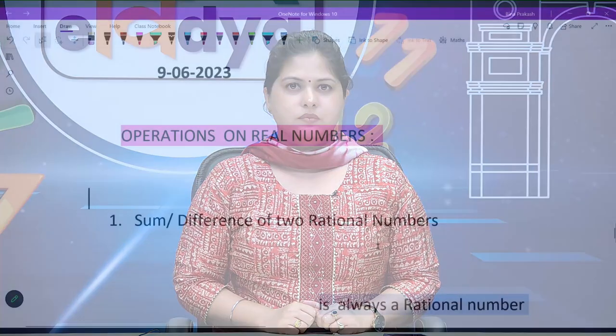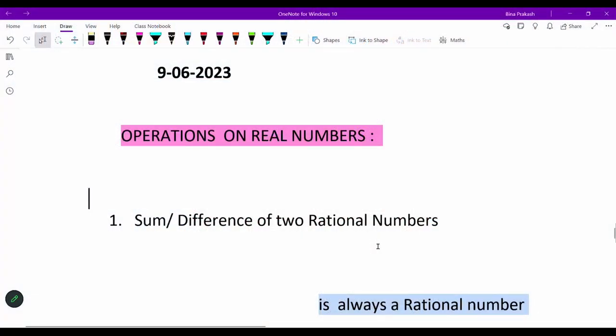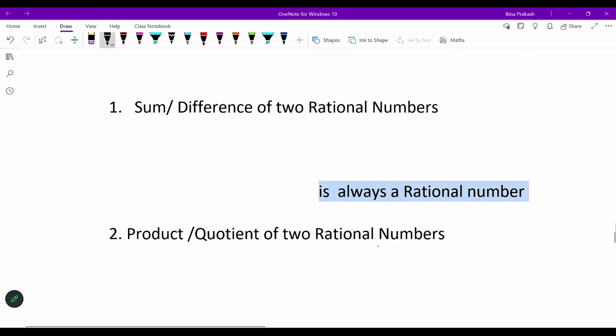Operations means addition, subtraction, multiplication, and division. To start with sum or difference, I have taken two rational numbers. Suppose you have two rational numbers: 2 and 1/3. The resultant of their addition comes out to be 7/3, which is a rational number.